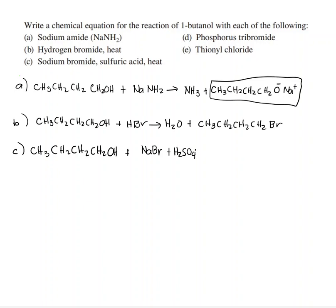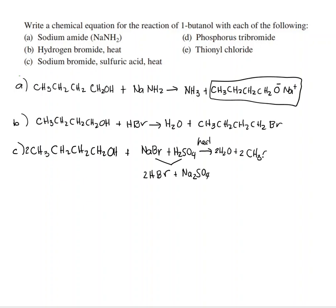2-butanol with NaBr and H₂SO₄, and you heat it. What happens when you mix sodium bromide and H₂SO₄ is you form HBr and Na₂SO₄, and the HBr reacts with the alcohol — the Br replaces the OH — and you get two H₂O's.